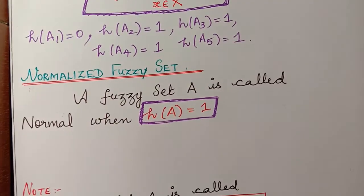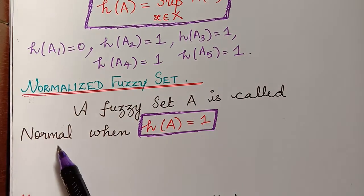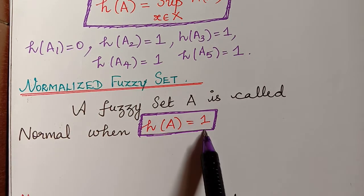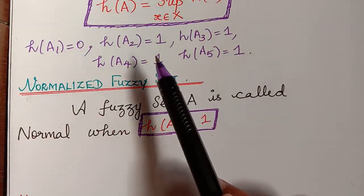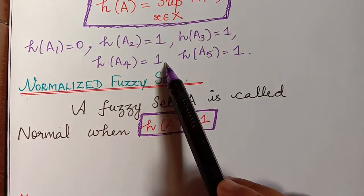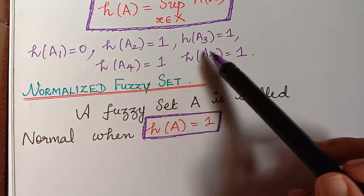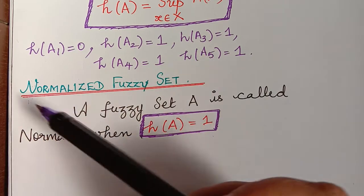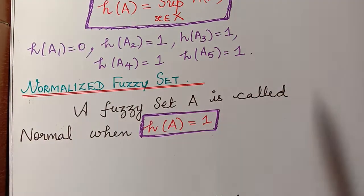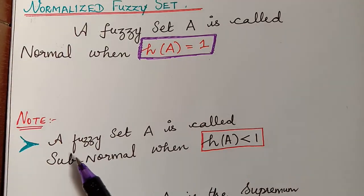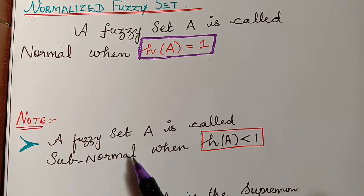Next is the definition for a normalized fuzzy set. A fuzzy set A is called normal when its height is equal to 1. Since A2, A3, A4, and A5 all have height equal to 1, they are normalized fuzzy sets. The height of A1 is 0, so A1 is not a normalized fuzzy set. A fuzzy set A is called subnormal when its height is less than 1, so A1 is a subnormal fuzzy set.